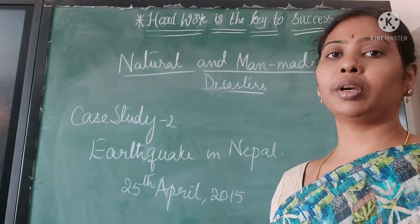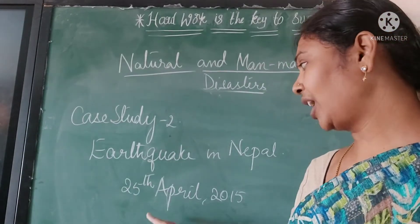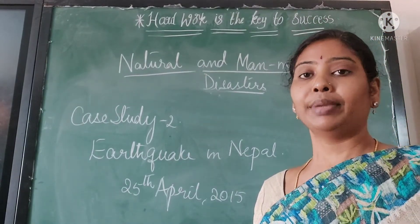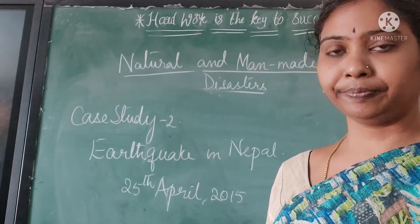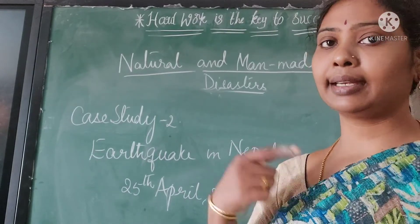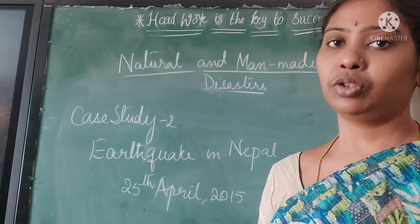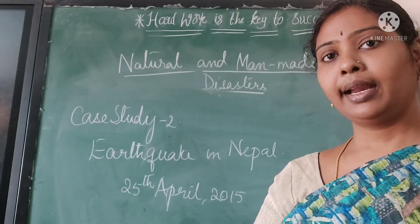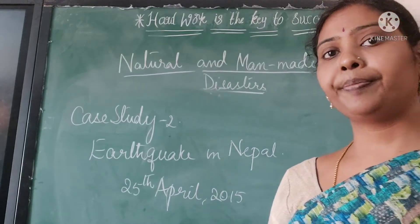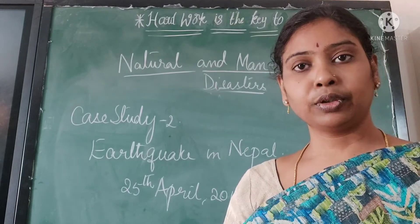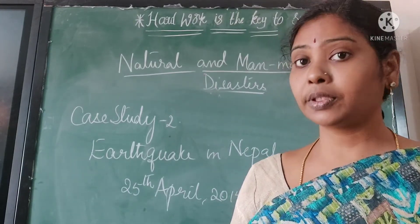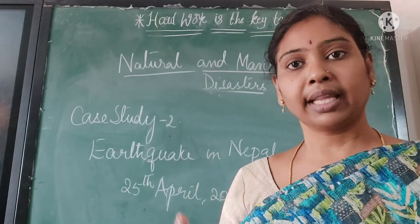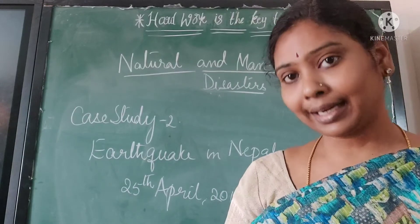The second natural calamity we are going to see is the earthquake in Nepal, which occurred on the 25th of April 2015 with a magnitude of 7.5. It happened because of the collision of tectonic plates, occurring six times and causing a lot of tremor. Most of Nepal depended upon tourism and a lot of tourist places were destroyed. People who depended on tourism as tourist guides were affected, and all stored food and crops were destroyed. Many suffered from water-related diseases.